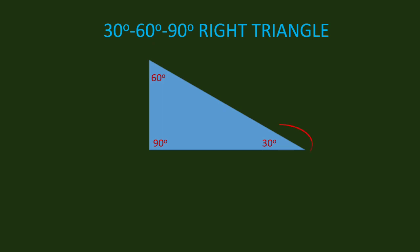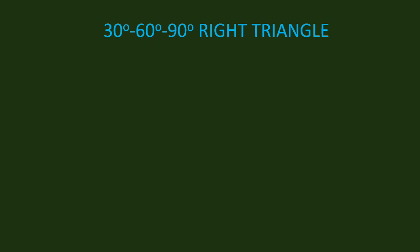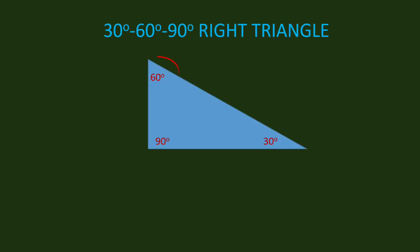Look at this figure. The basis for our angle is 30 degrees. The side opposite to this angle is called the opposite side. The diagonal is the hypotenuse, and the other leg is called the adjacent side. If the basis for our angle is 60 degrees, then the side opposite to 60 degrees is called the opposite side. The diagonal is called the hypotenuse, and the other leg is the adjacent side.